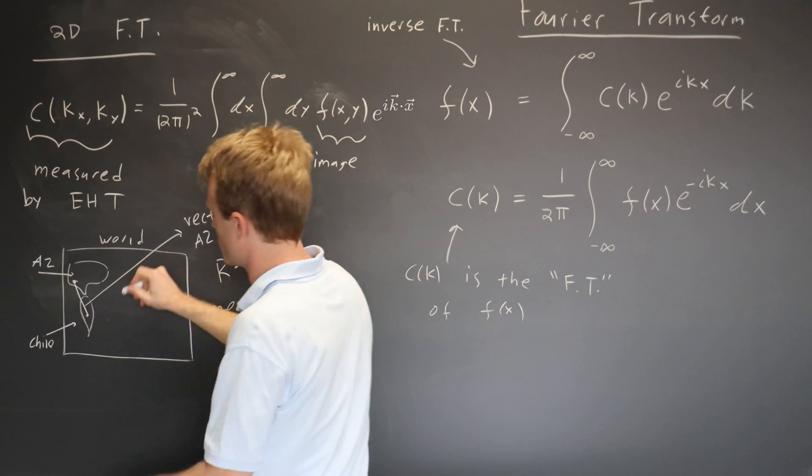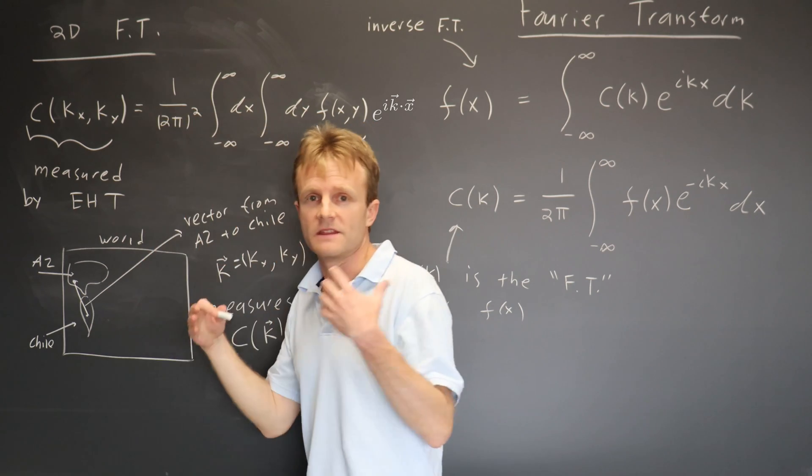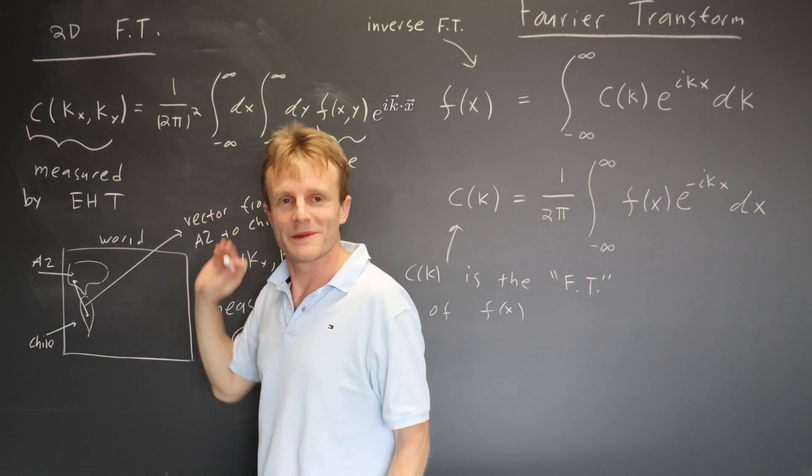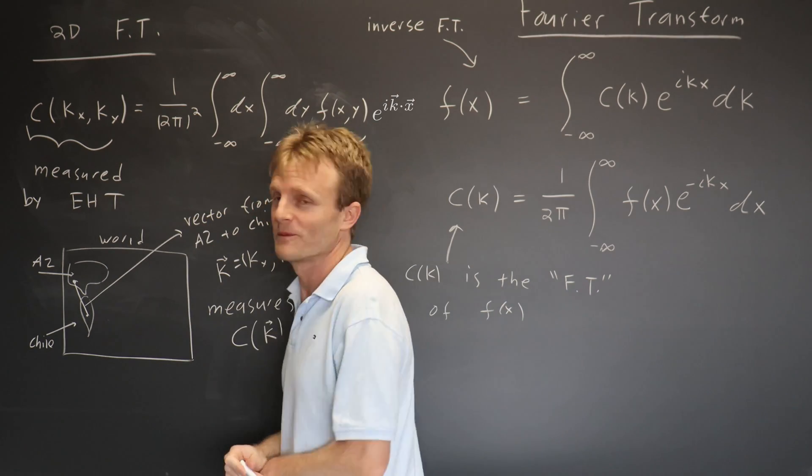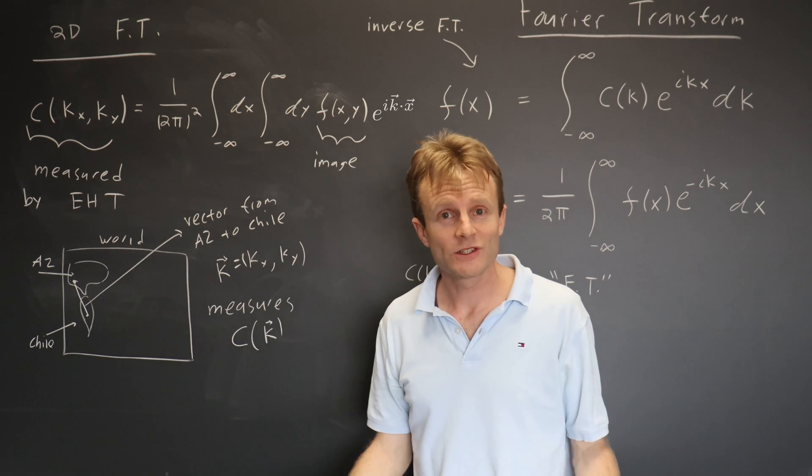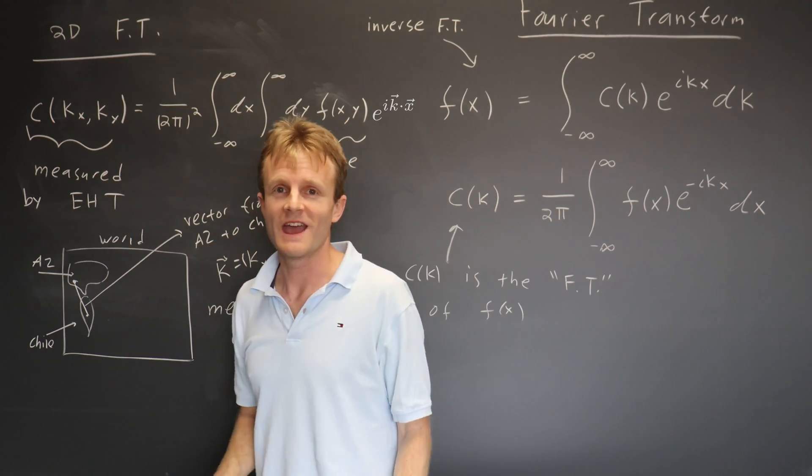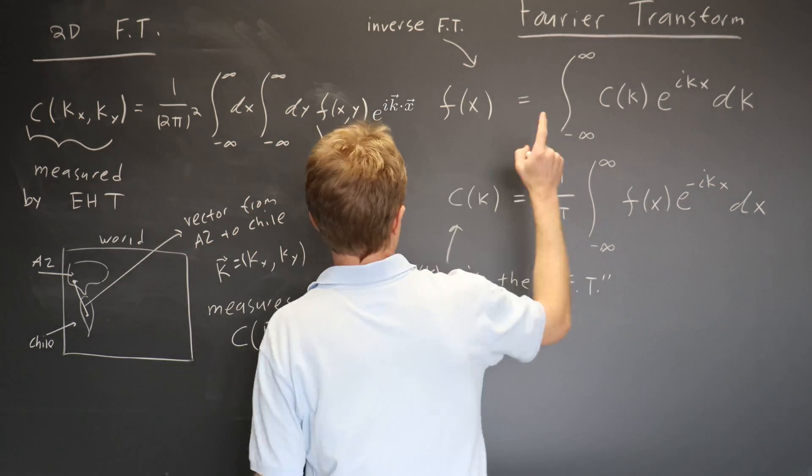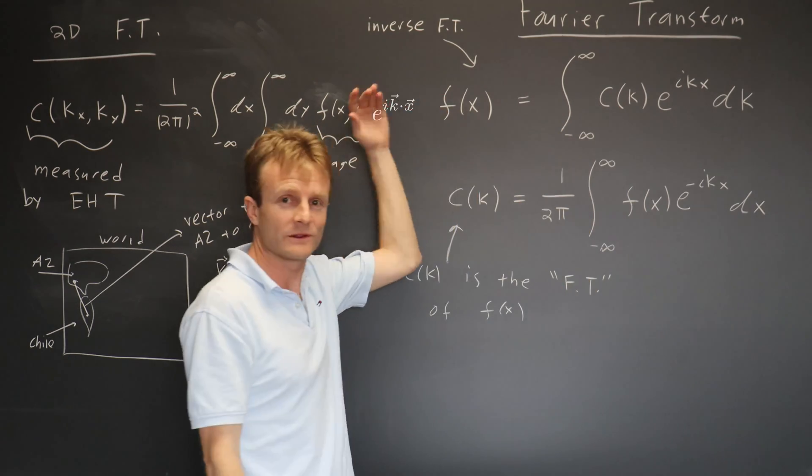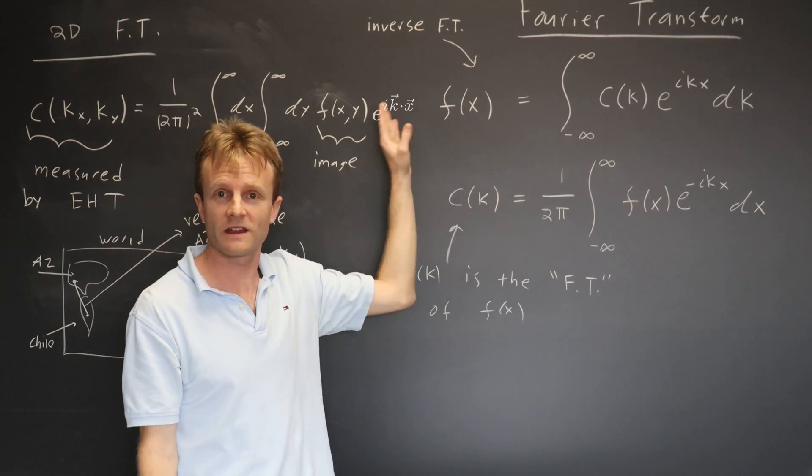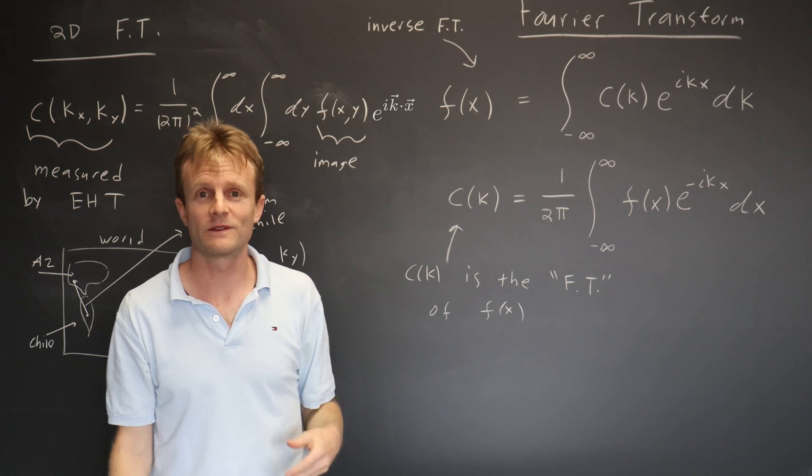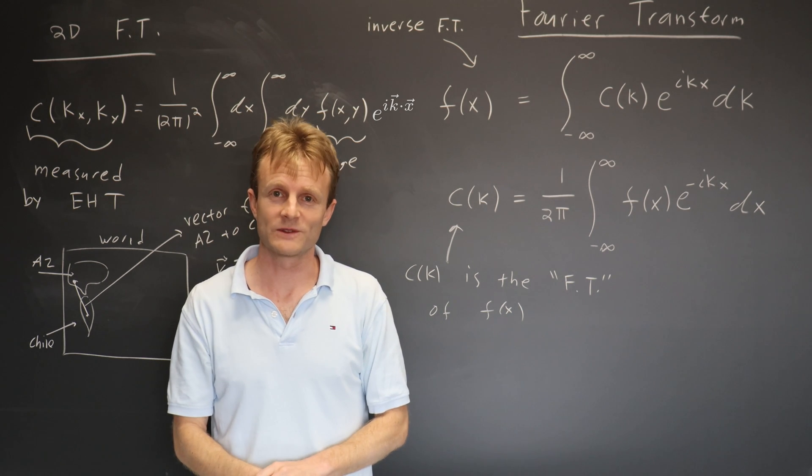And then they have telescopes all over the world, and they put them all together, and they get some other pieces of the Fourier transform of the image, and what do they actually show you? Well, they make their best guess for the parts of this they haven't measured, and then they do the inverse Fourier transform. They literally do this kind of integral on their data, the two-dimensional version, and that's what produces the beautiful image that you saw.